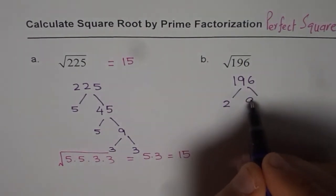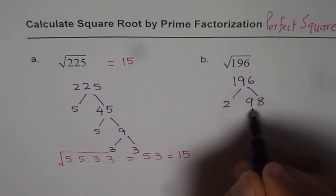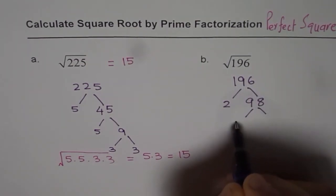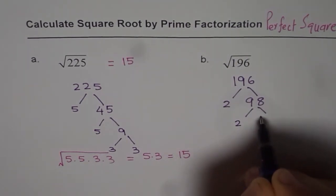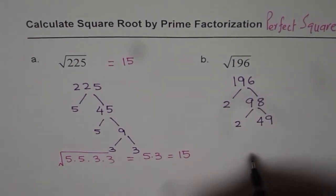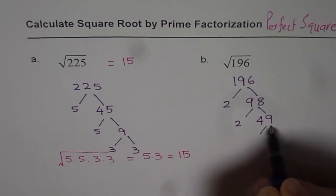I get 2 times 9 is 18, left with 16, 2 times 8. Again, we can divide by 2. So 2 times 4 is 8, and 49. 49 is 7 times 7.